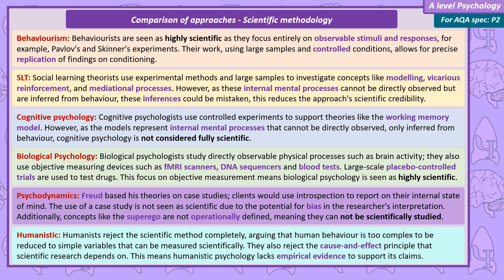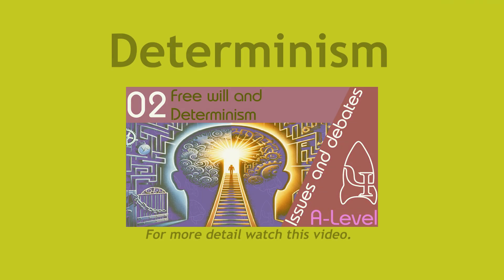Humanists reject the scientific method completely, arguing that human behaviour is too complex to be reduced to simple variables that can be measured scientifically, and they also reject the cause-and-effect principle that scientific research depends on. This means humanistic psychology lacks empirical evidence to support its claims.